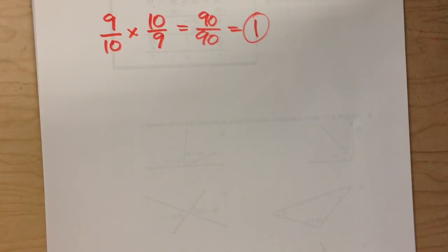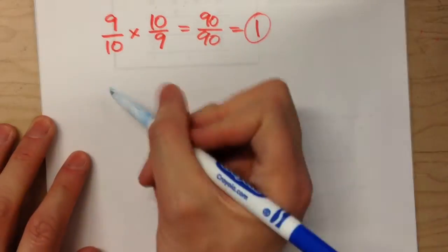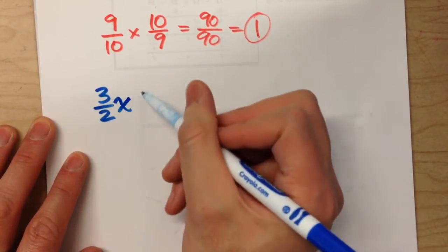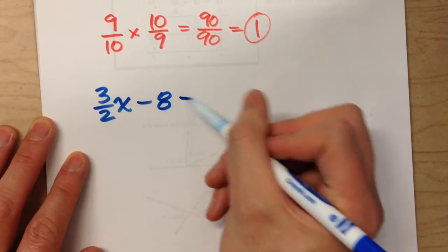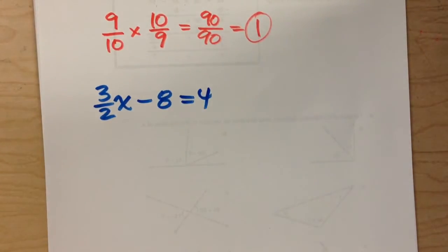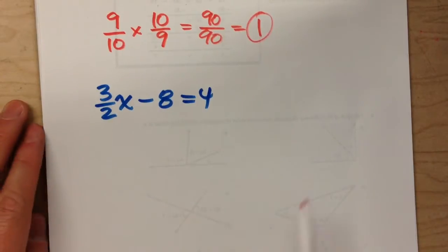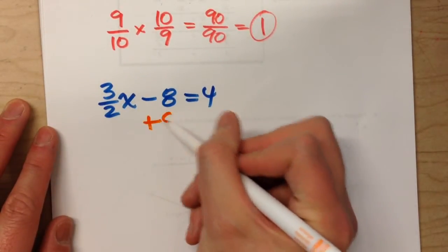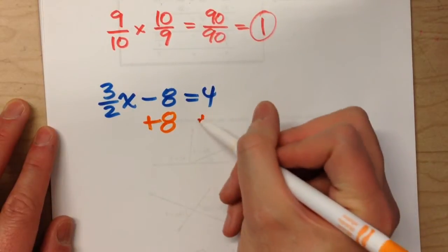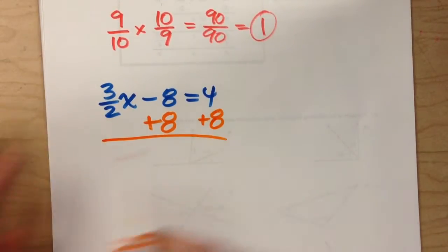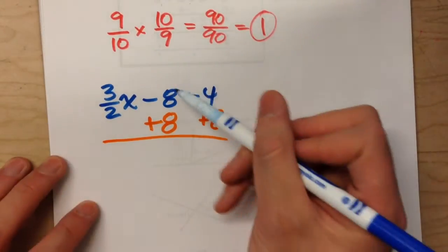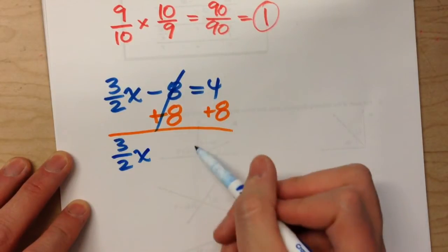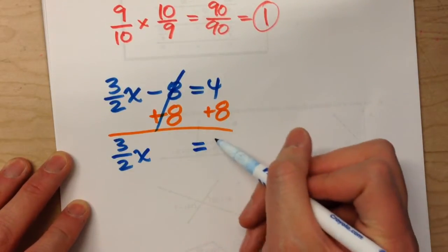Let's solve this equation: 3 halves times x minus 8 equals 4. To solve it, just do what we've been doing all along. First, undo the minus 8 by adding 8 to both sides of the equal sign. The 8s cancel each other, and 3 halves times x drops down. Equals drops down. 4 plus 8 is 12.